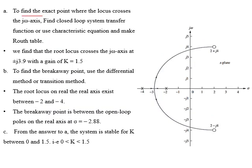The first part of the problem requires the exact location where the root locus crosses the j-omega axis and the value of gain K. Using the Routh table with the characteristic equation of the closed loop system, we find that the root locus crosses the j-omega axis at the point ±j3.9 with a gain of 1.5.